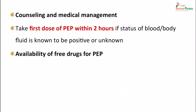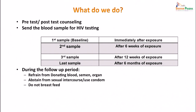Counseling and medical management follow. The first dose of post-exposure prophylaxis (PEP) should be taken within 2 hours if the status of the blood or body fluid is known to be positive, or even if unknown. Free drugs for PEP should be available. Conduct pre-test and post-test counseling and send blood samples for HIV testing: a baseline sample immediately after exposure, a second at 6 weeks, a third at 12 weeks, and a last sample at 6 months.